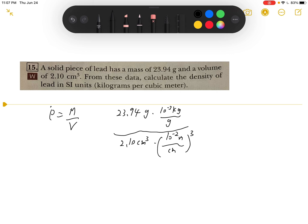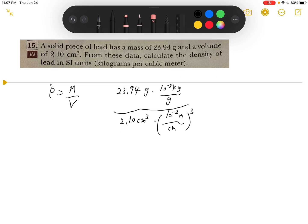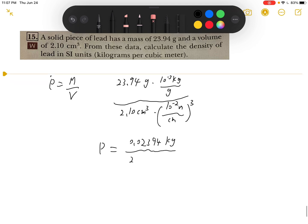After we convert and divide, we have rho equals 0.02394 kilograms over 2.10 times 10 to the negative 6 meters cubed.